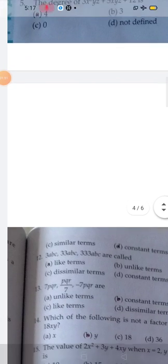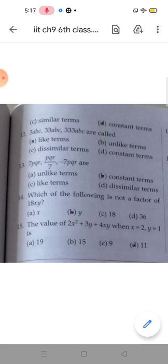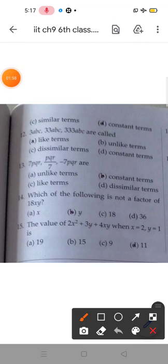Now next, question number 12. These terms - in here, we have variable check kareenge: ABC, ABC, ABC, so these are like terms.